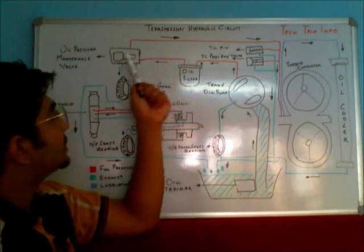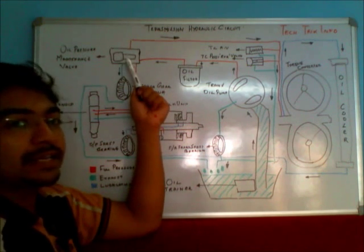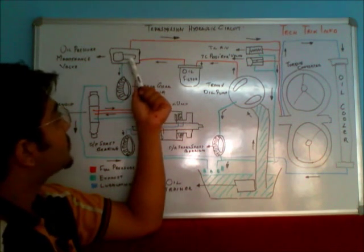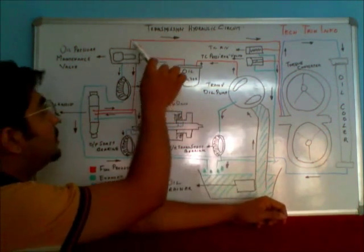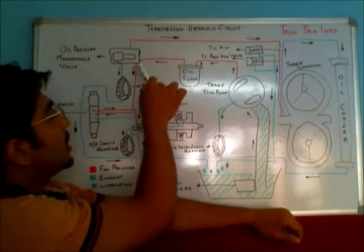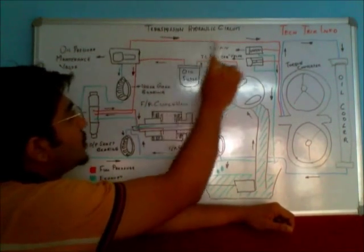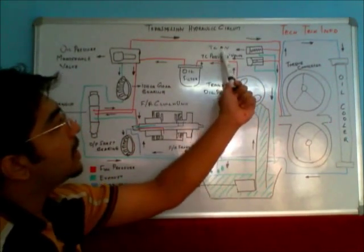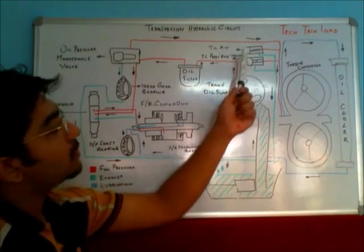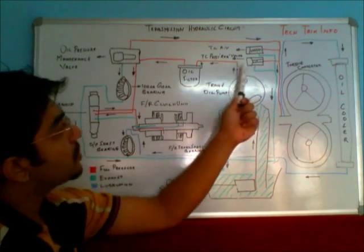As the pump sucks the oil, it supplies it towards the transmission oil filter, where the oil gets filtered and is then supplied toward the oil pressure maintenance valve. This valve maintains the pressure required for different operations.